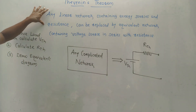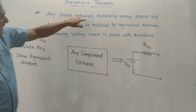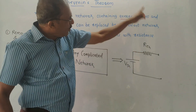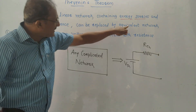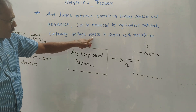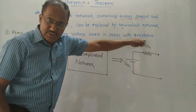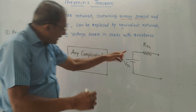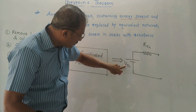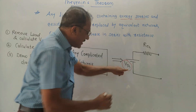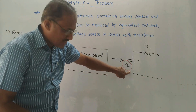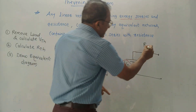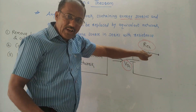The statement of Thevenin's theorem is: any linear network containing energy sources — that means current source or voltage source — and resistance can be replaced by an equivalent network containing a voltage source in series with resistance. After applying Thevenin's theorem, the simplified circuit contains a voltage source denoted by VTH (Thevenin's equivalent voltage) in series with resistance denoted by RTH (Thevenin's equivalent resistance).